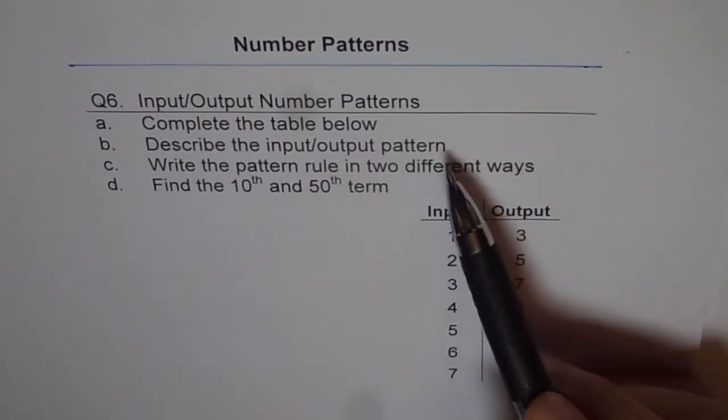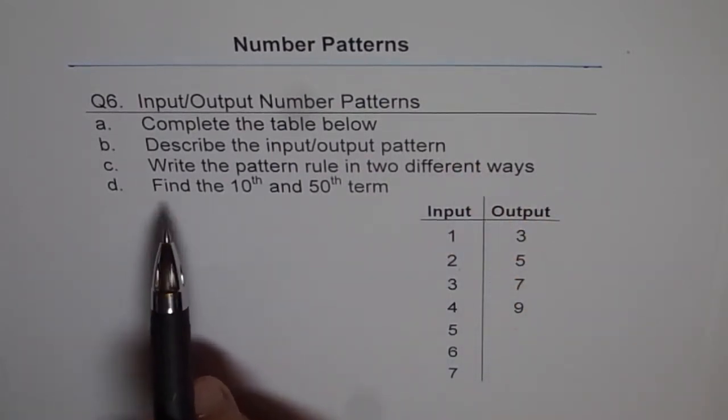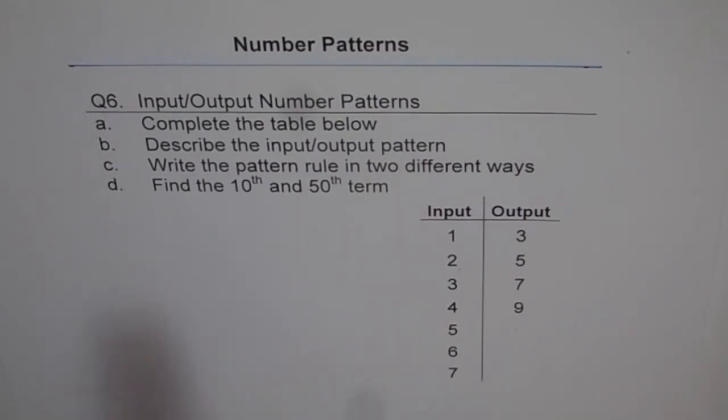Which is same as Part B. And the last question is, find 10th and 50th term. So for finding 10th and 50th term, you can write 10 terms here or even 50, go on the list. And another way is to use your Input-Output formula, which will help you to do it.